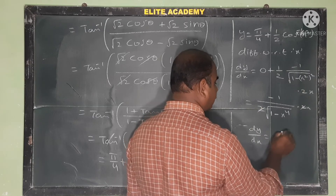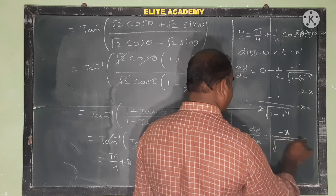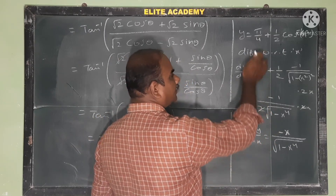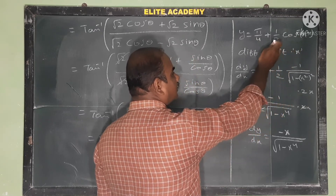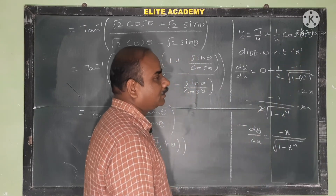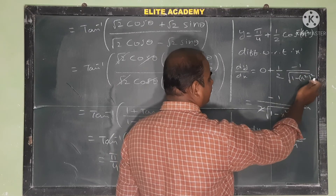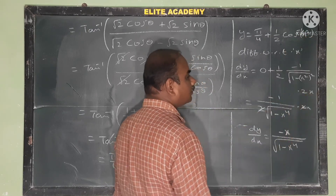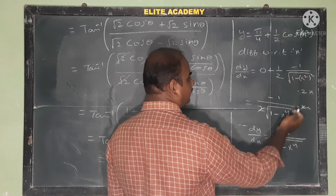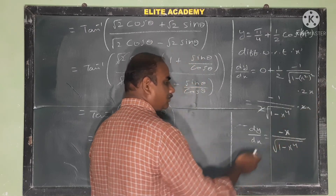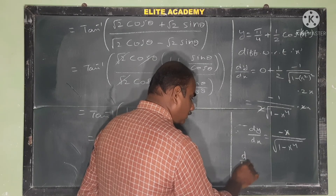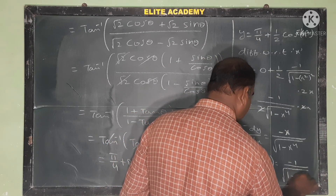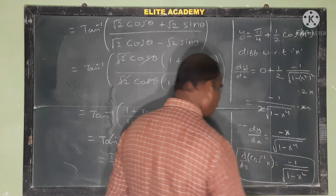Differentiating with respect to x: pi by 4 is a constant so its derivative is 0. For theta equal to (1/2) cos inverse x square, the derivative of cos inverse x is minus 1 by root of (1 minus x square). Applying the chain rule with derivative of x square equal to 2x, and simplifying, we finally get dy by dx is equal to minus x divided by square root of (1 minus x power 4).